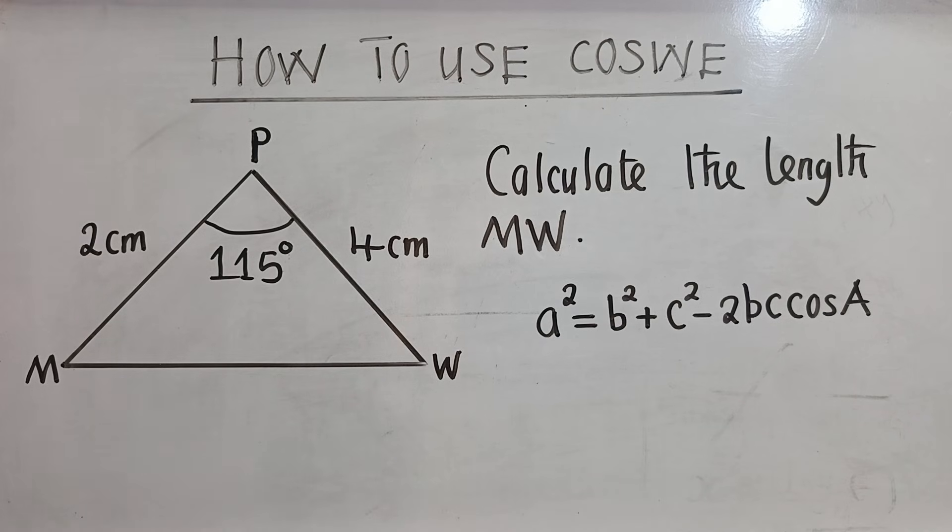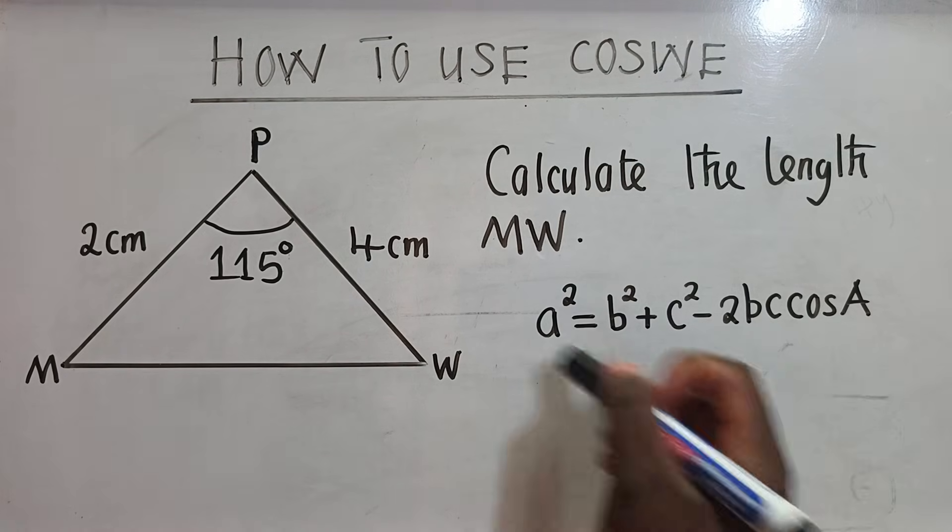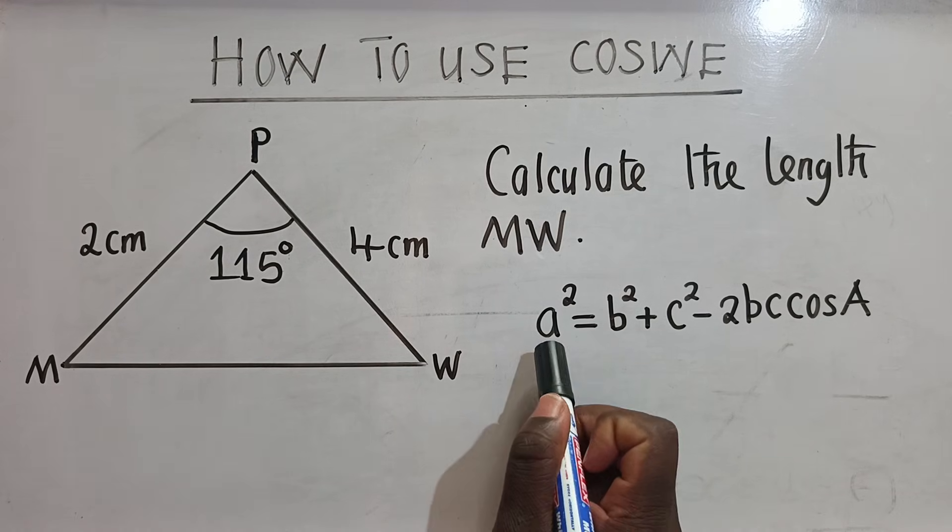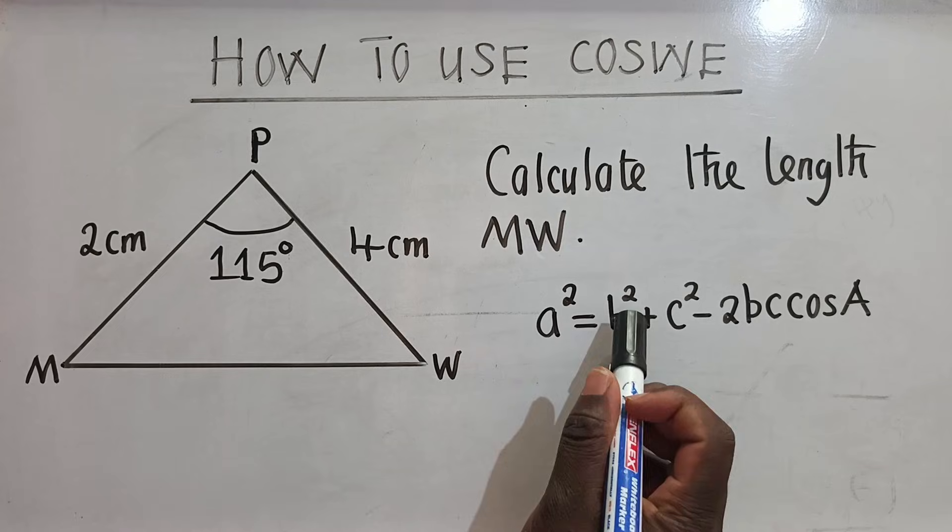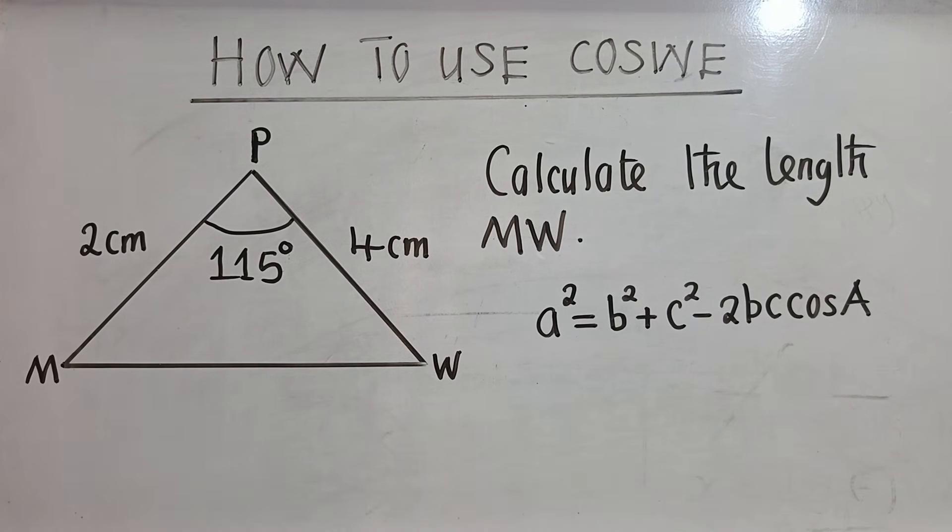Okay, so for cosine rule, the most important thing that you must consider is the formula. The formula that you're able to see here is called cosine rule formula. It starts with a² = b² + c² - 2bc cos capital letter A.